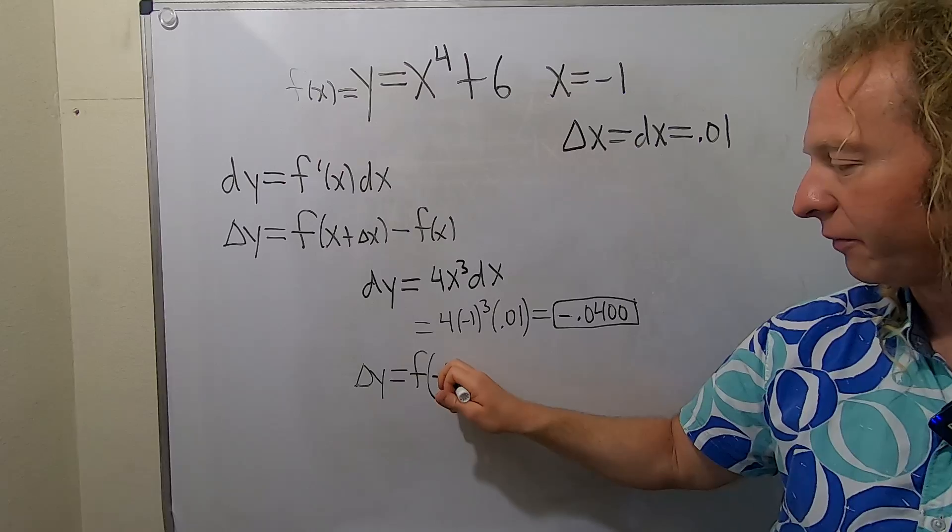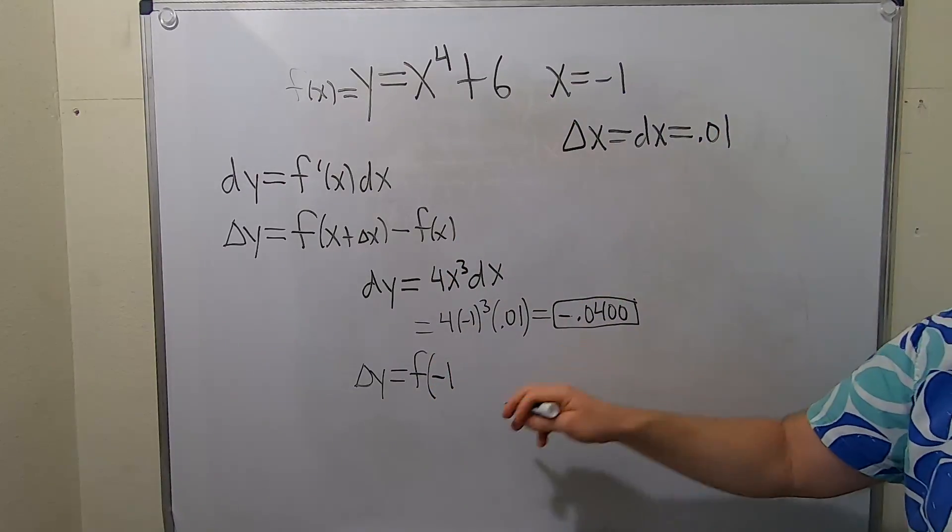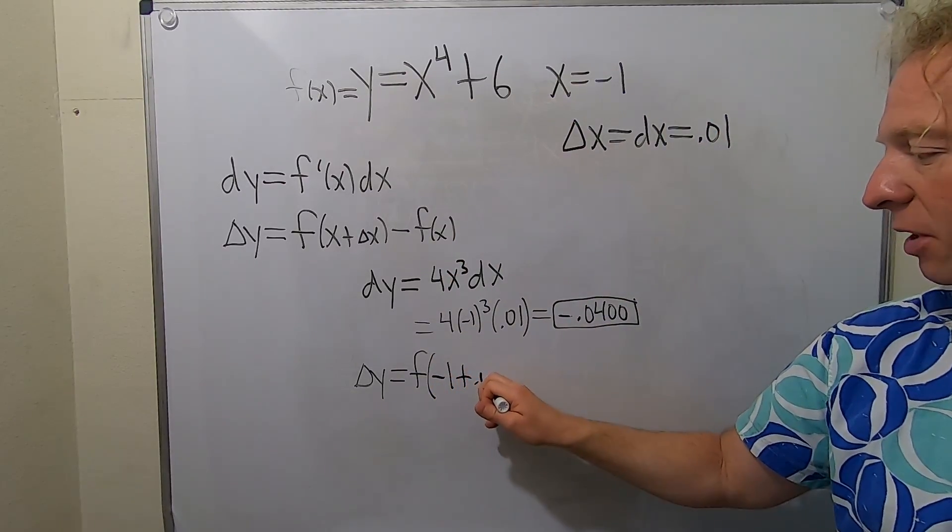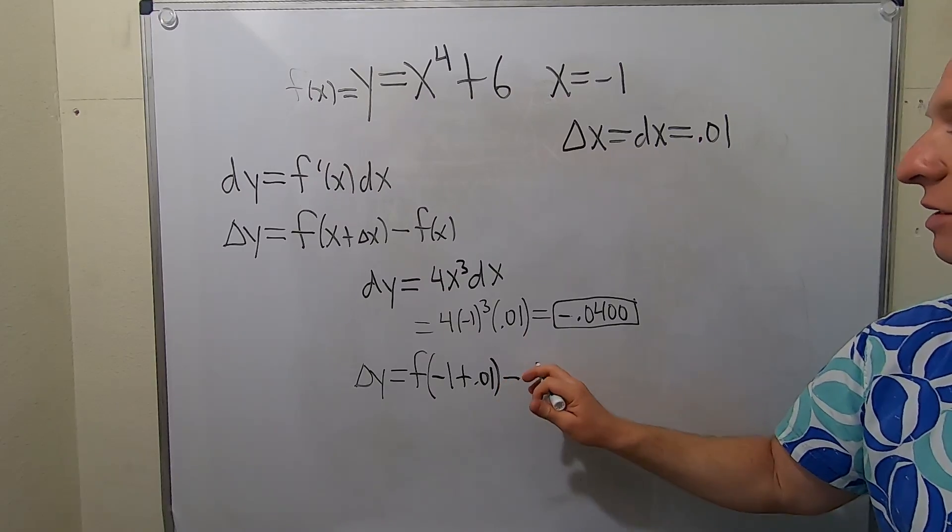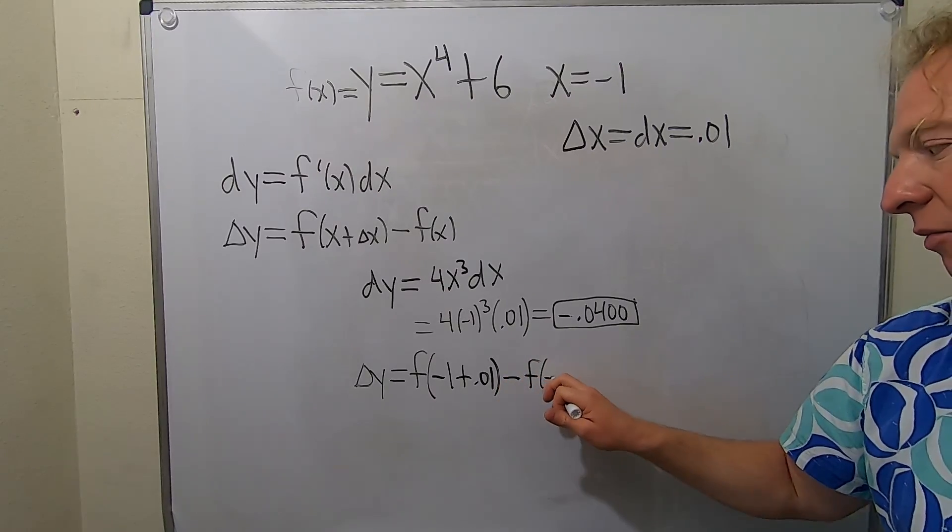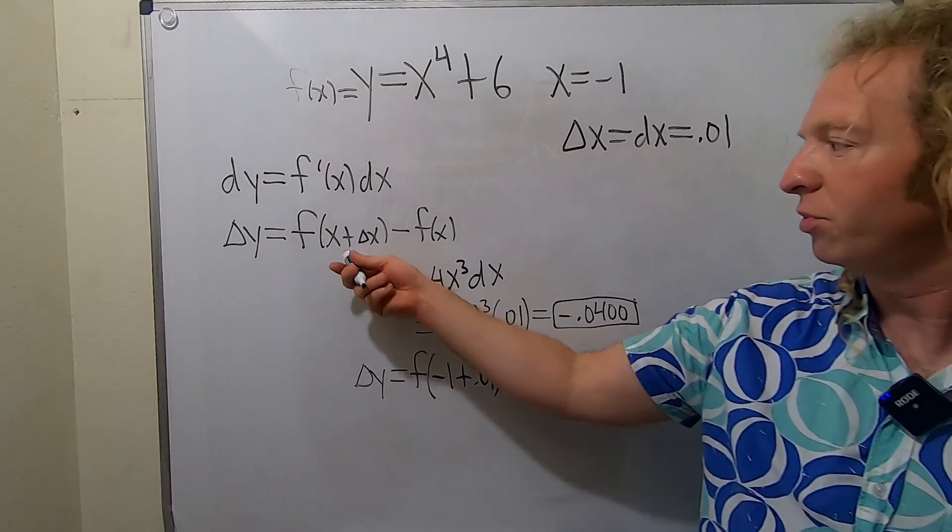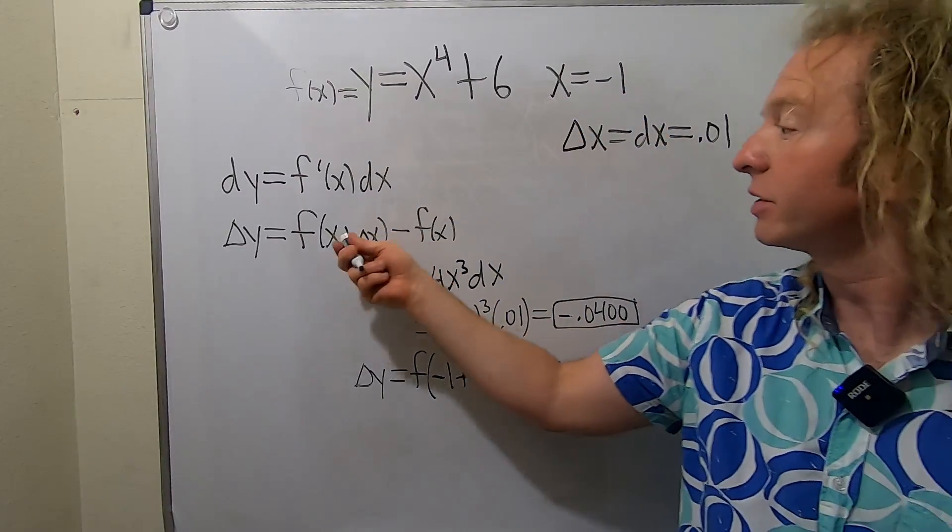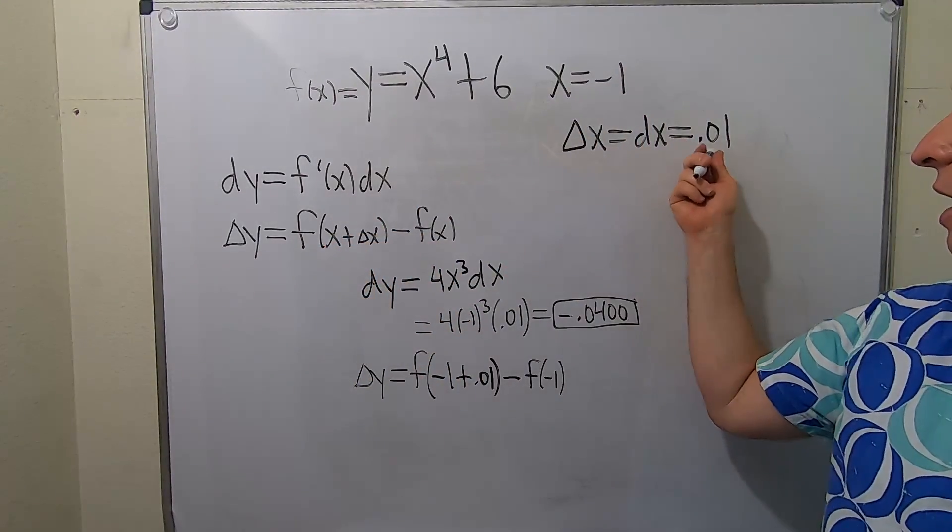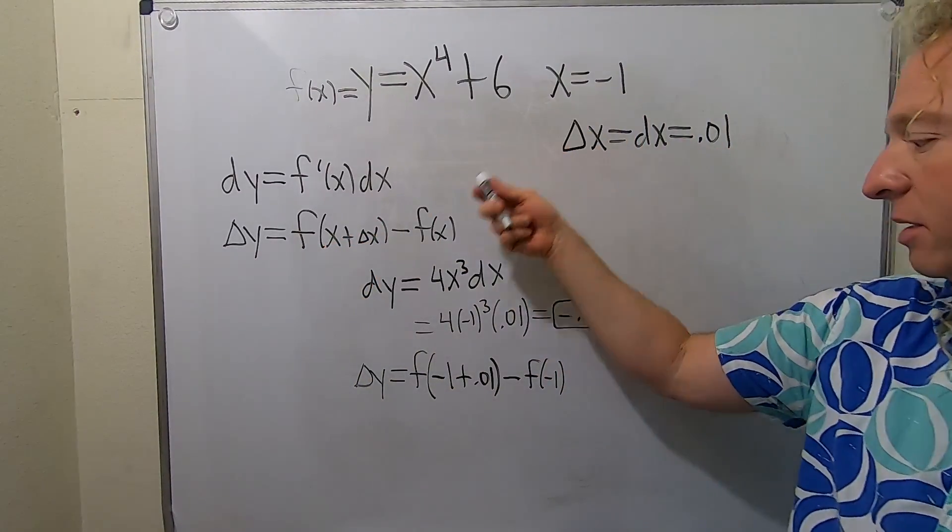x is negative 1 and delta x is 0.01. We plug them into the formula: f of negative 1 plus 0.01 minus f of negative 1.